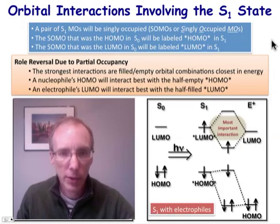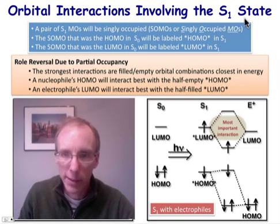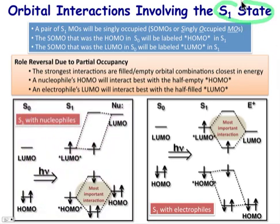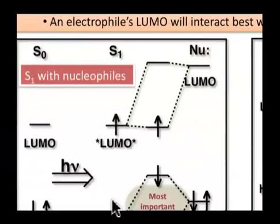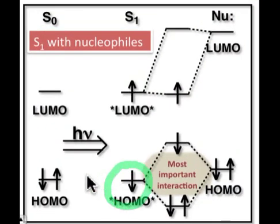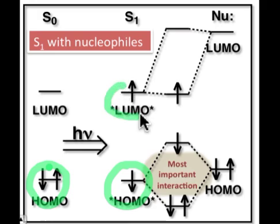In this webcast, we're going to talk generally about the molecular orbital interactions between either a nucleophile or an electrophile and a molecule that's in its S1 excited state. The molecule in its S1 excited state is going to have a pair of singly-occupied molecular orbitals, or SOMOs. The SOMO that used to be the HOMO in the ground state is labeled as HOMO star, and the SOMO that used to be the LUMO in the ground state is labeled as LUMO star.